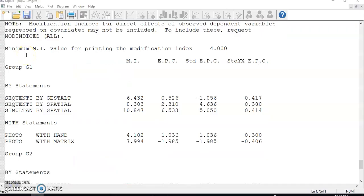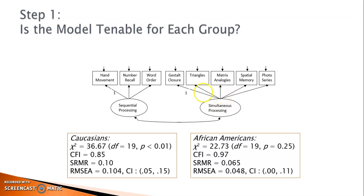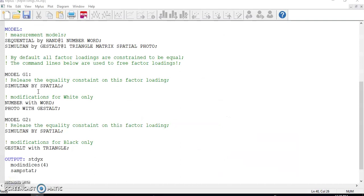In step 3, we go to the modification indices of the constrained model. One acceptable suggestion is to release the loading between simultaneous and spatial. You can tell by this line, simultaneous by spatial being repeated for both groups. Well, we already had a loading from simultaneous processing to spatial memory in the model. In other words, spatial is already an indicator of simultaneous processing. What we need to do is to simply repeat this relationship in model G1 and model G2 blocks to set it free from equality constraint. Run the analysis after making the changes.